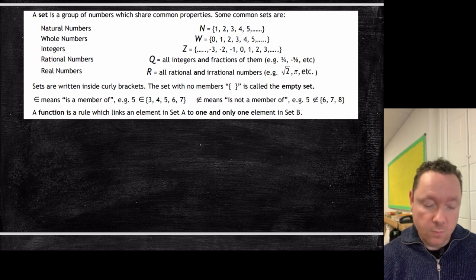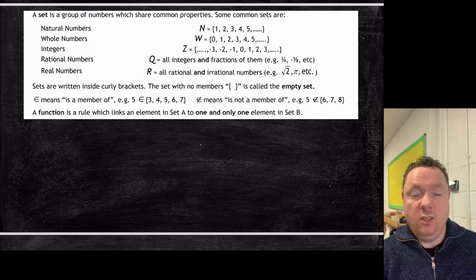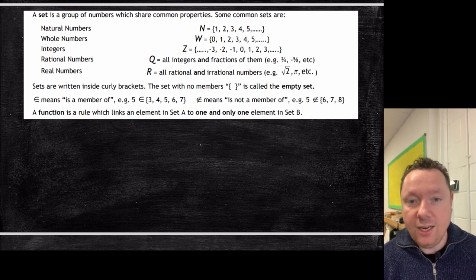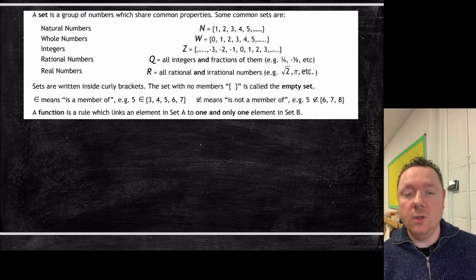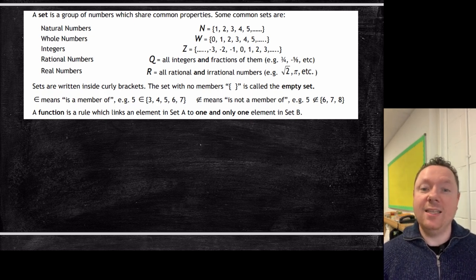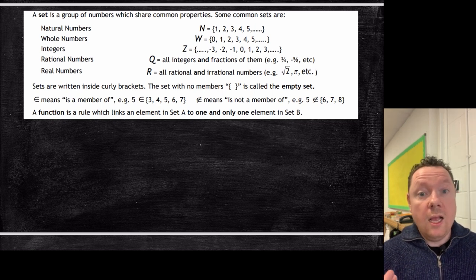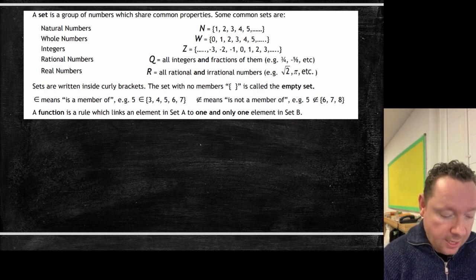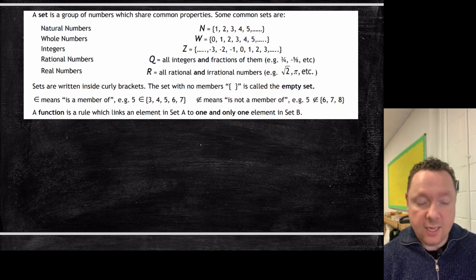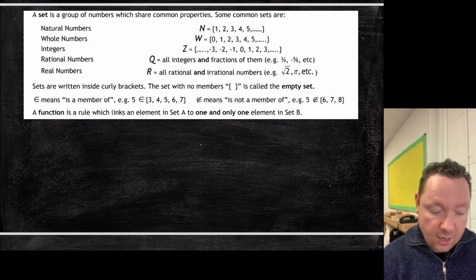The real numbers are basically all numbers you've ever come across, including pi, root two, and things that can't be written as a fraction. That's why we call them real numbers. You would learn later on in advanced higher or further maths about something called complex numbers, but we're not going to get into imaginary numbers here. We write sets inside curly brackets, and a set with no numbers would be the empty set — curly brackets that are empty.